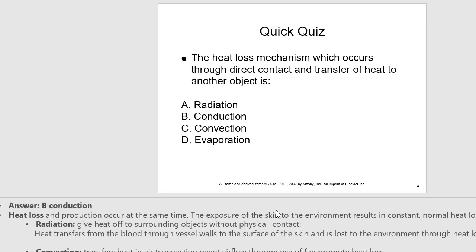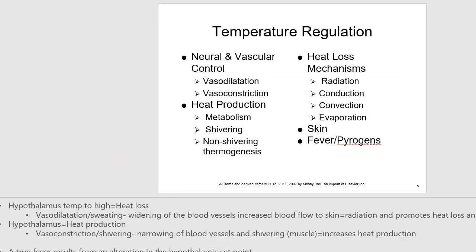A true fever results from an alteration in the hypothalamus. Substances that trigger the immune system — such as viruses, bacteria, and other illnesses — stimulate the release of hormones. In an effort to promote bodily defense against infection, these hormones also trigger the hypothalamus to raise the set point of temperature, which induces a febrile episode.